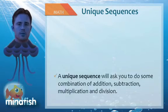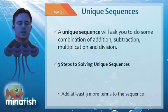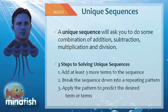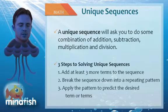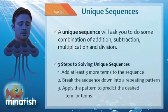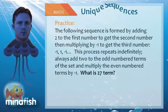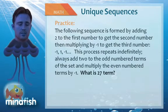Unique sequences is the last of the three types of sequences that the SAT requires you to understand. Unique sequences are just made up. They're going to give you the sequence. They're going to tell you how it's formed. It's up to you to create some new terms and to find out what they're asking for. So in the sequence below, we have negative 1, 1, negative 1. And it says that basically repeats.